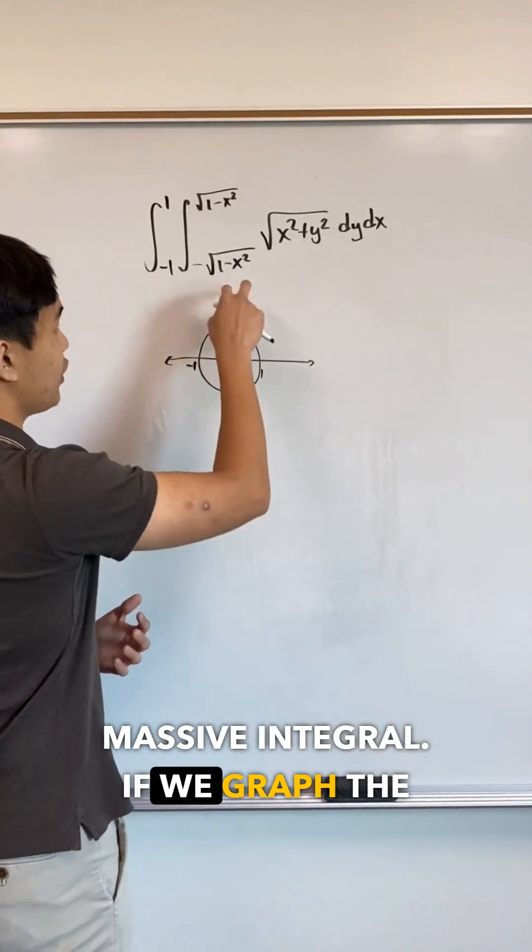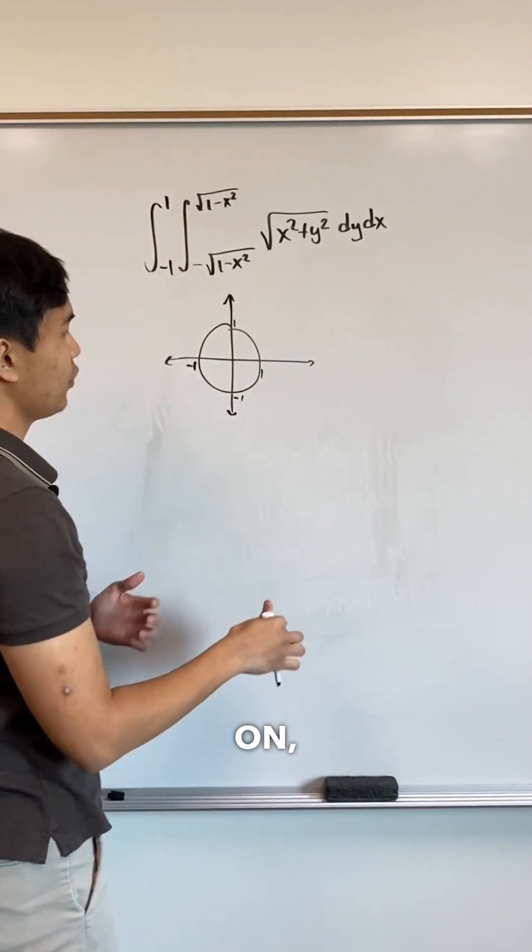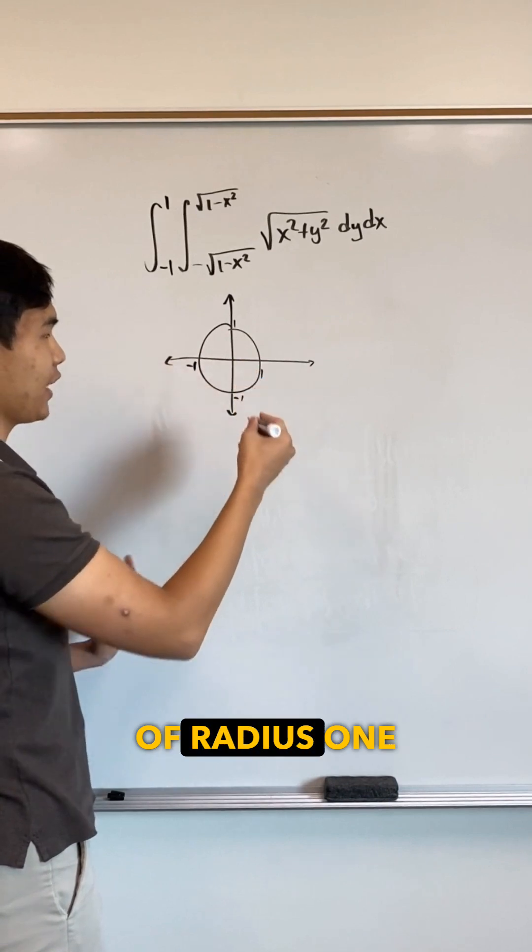Imagine we want to solve this massive integral. If we graph the bounds that we're asked to integrate on, we can see that it's actually just a circle of radius 1 centered at the origin.